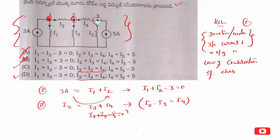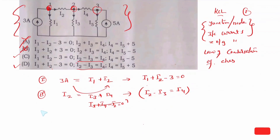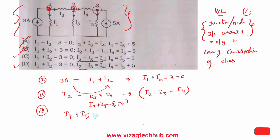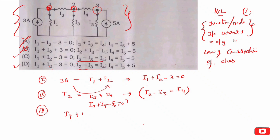At node 3, the incoming currents are I4 and 5A. I5 is not 5A — the incoming current is I4 plus 5A and the outgoing current is I5.